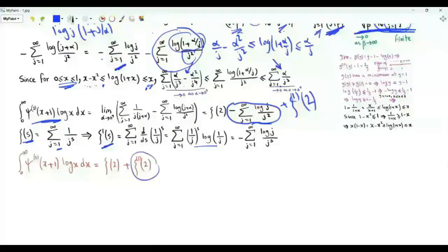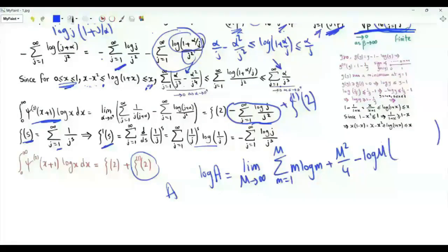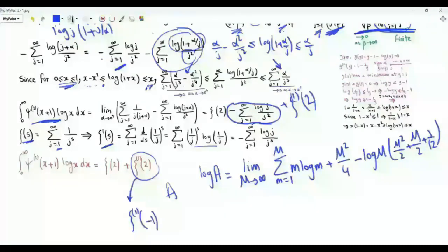The second half of this presentation is about writing this derivative in terms of the Glaisher-Kinkelin constant A. Log A is the limit as M tends to infinity of the summation of m log m from 1 to M, plus M squared over 4, minus log M multiplied by the quadratic polynomial M squared over 2 plus M over 2 plus 1 over 12.